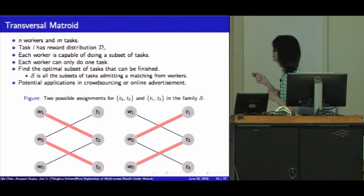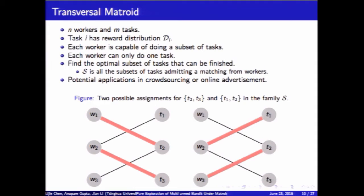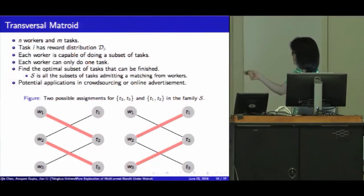Also, there's an interesting example, which is called transversal matroid. There are n workers and n tasks. Each task has a reward distribution. And each worker can do some kind of task. And each worker can do only one task. You want to find the optimal subset of tasks that can be finished. So S is all the subsets of tasks that are matching from the workers. For example, let's look at these two graphs. This shows two candidates of the family S.